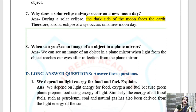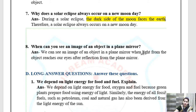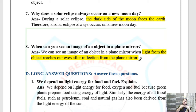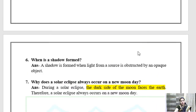Question 8: When can you see an image of an object in a plane mirror? We can see an image of an object in a plane mirror when light from the object reaches our eyes after reflection from the plane mirror. Only when a source of light hits the mirror and reflects to our eyes can we see the image. That was all 8 short answer questions — children, you can write them down. I will send you this PDF.